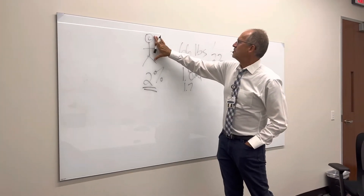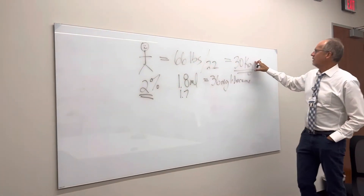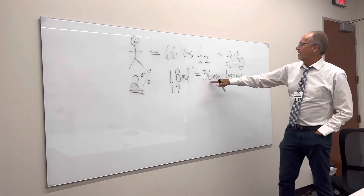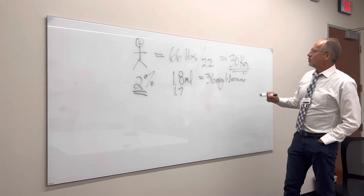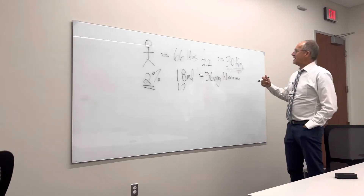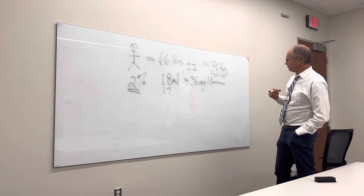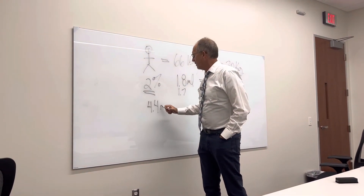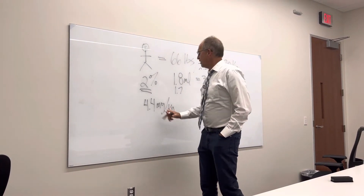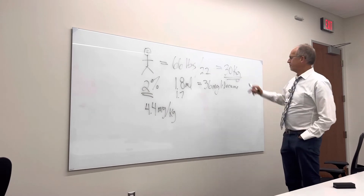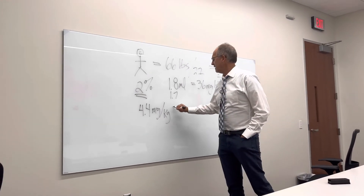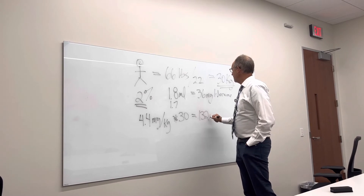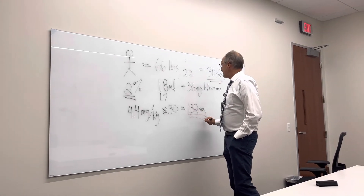So the first thing we did is we weighed the child — 66 pounds, divided by 2.2, giving us 30 kilograms. We know that in a 2% lidocaine carpule we have 36 milligrams of lidocaine. The question may be: how many milligrams of lidocaine can we give to a 30 kilogram child? We know that the maximum dose is 4.4 milligrams per kilogram. So 4.4 milligrams per kilogram times 30 kilograms gives us 132 milligrams — that's the max we can give them.